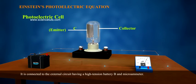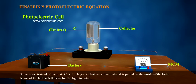It is connected to the external circuit having a high-tension battery B and microammeter. Sometimes, instead of the plate C, a thin layer of photosensitive material is pasted on the inside of the bulb. A part of the bulb is left clean for the light to enter it.